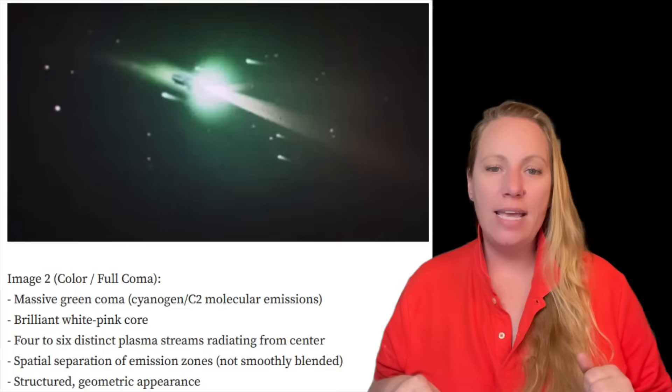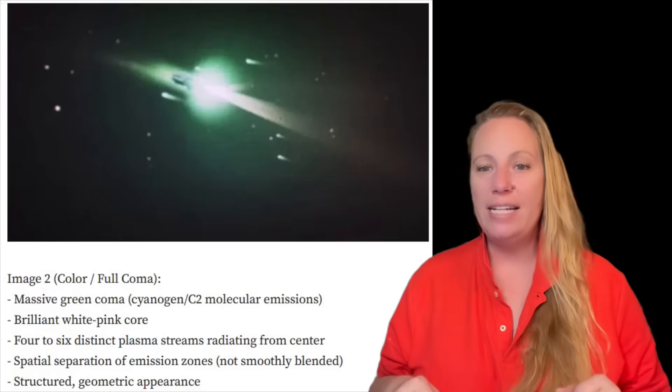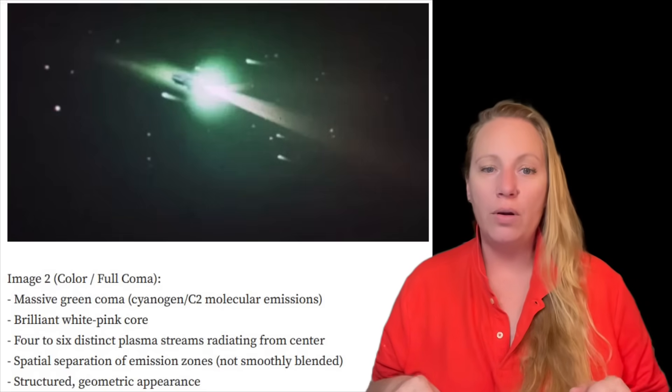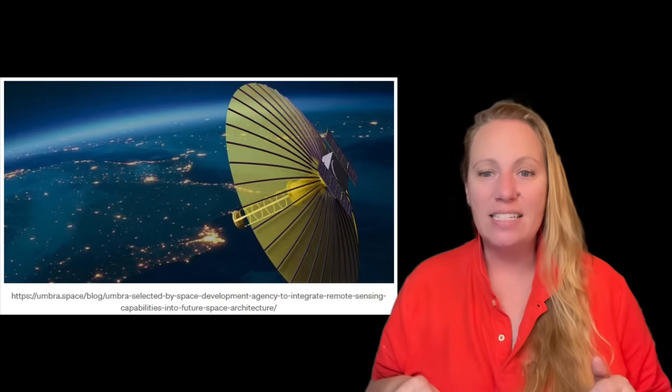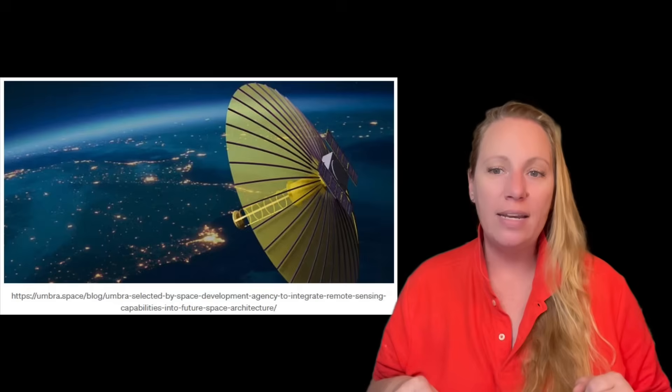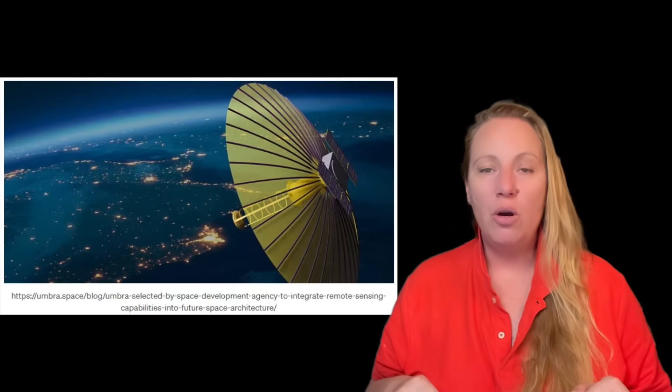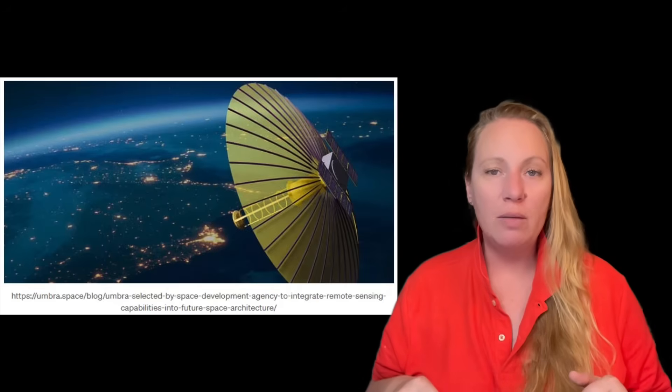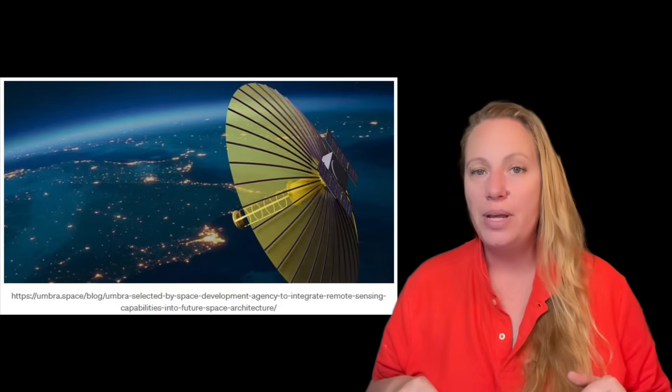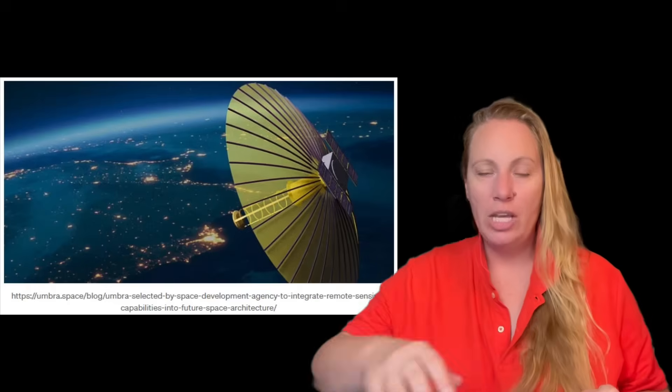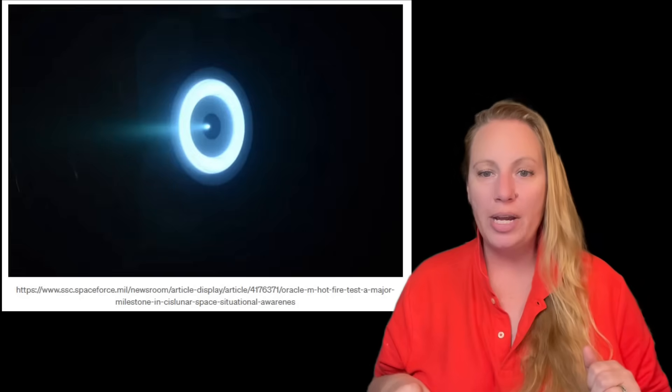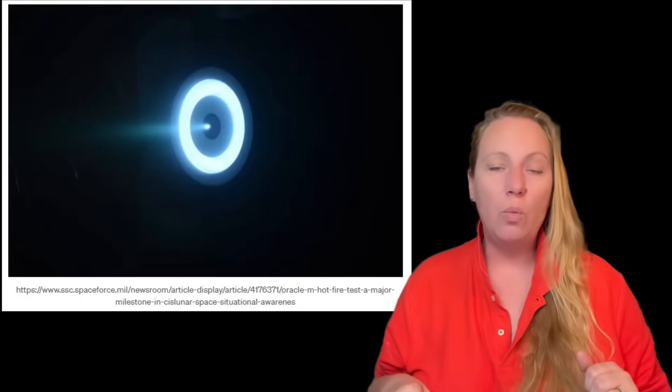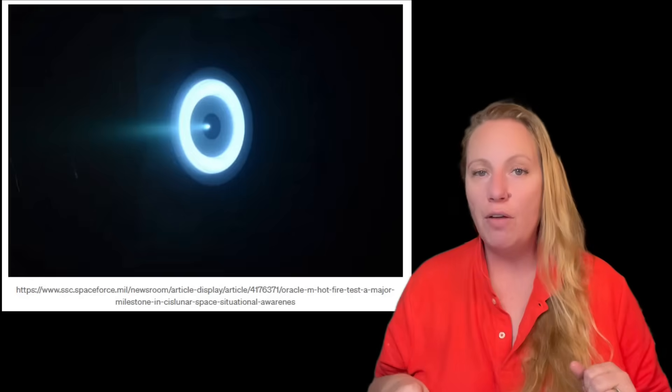And then there's Umbra's SAR satellite constellation, which provides complementary low Earth orbit surveillance. Umbra's 32 satellite system, operational since 2021, captures 25-centimeter resolution synthetic aperture radar imagery capable of tracking moving targets in all weather and lighting conditions. That combined with Oracle, these assets appear to create a multi-layered surveillance network with continuous Earth orbit and cislunar coverage.